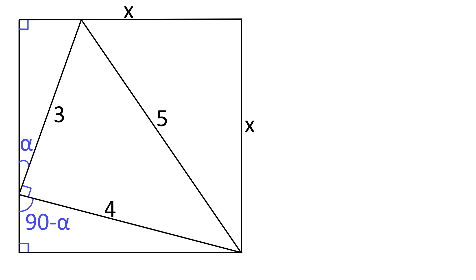These two angles are right angles as the outer shape is a square. We can then work out these two other angles. This confirms the triangle with hypotenuse of 3 is similar to the triangle with hypotenuse of 4.